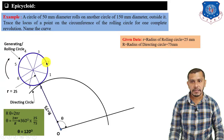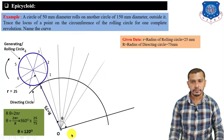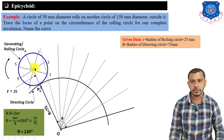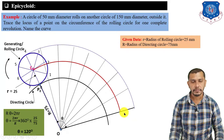As we have divided the rolling circle into eight equal parts, we also divide the θ angle of 120° into eight equal parts, and draw the lines from center O. Mark point P0 and C0. Then, taking center O with radius equal to O to 4, draw an arc. Taking center O with radius equal to O to C0, draw another arc and show the final position of the circle.